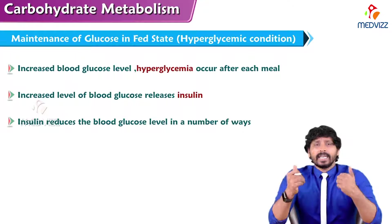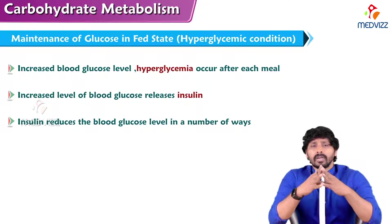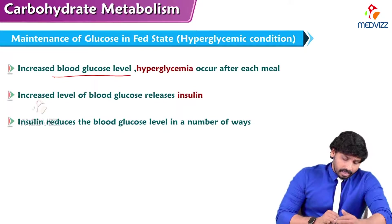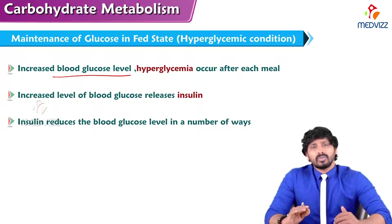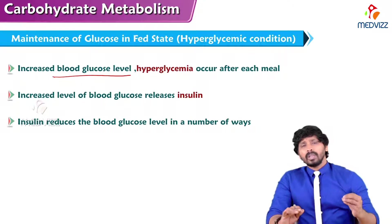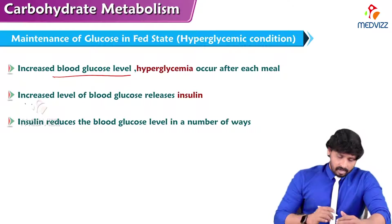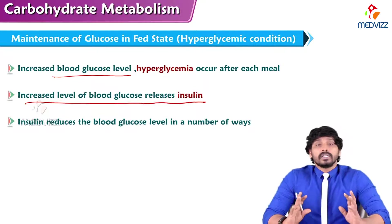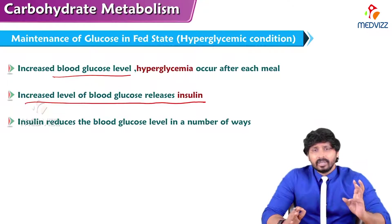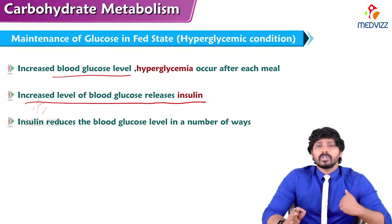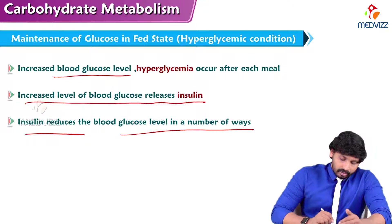In the well-fed state, we have taken excess food. What changes do these hormones make to carbohydrate metabolism? After digestion, absorption, and transport, glucose is dumped to the liver, which transports glucose to the circulation to reach different parts of the body. Blood glucose levels will be higher at this time — this condition is called hyperglycemia after every meal. There will be increased levels of insulin because pancreas senses higher glucose concentration.